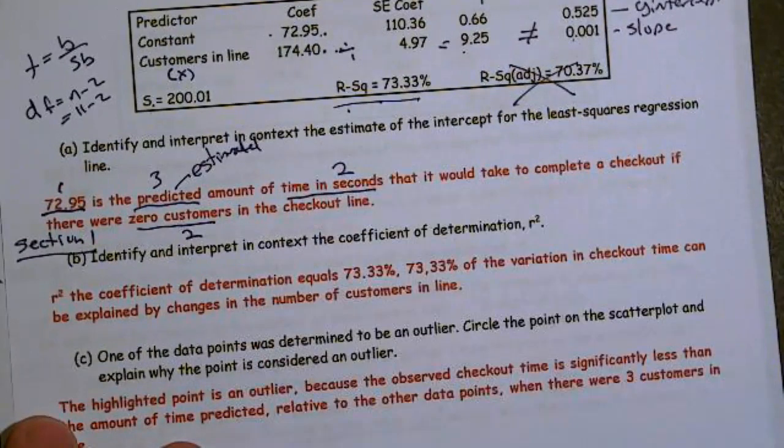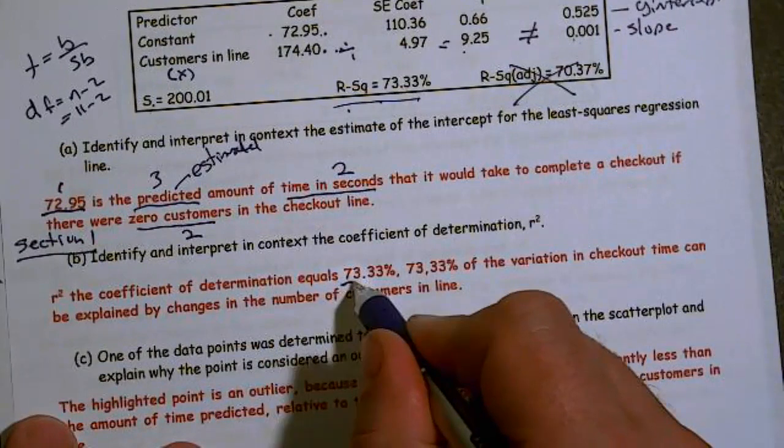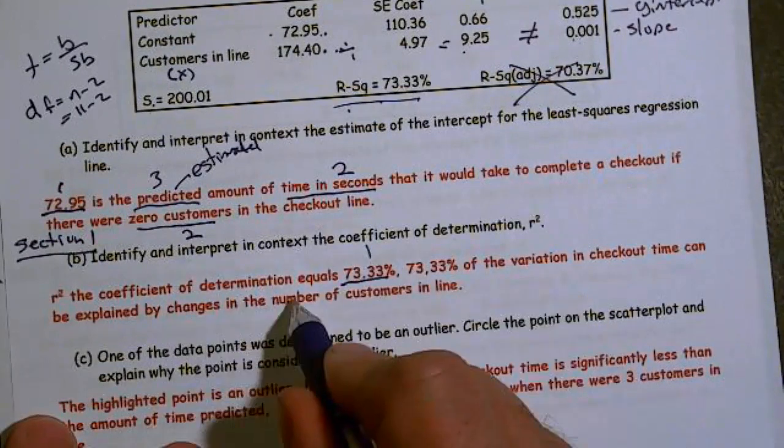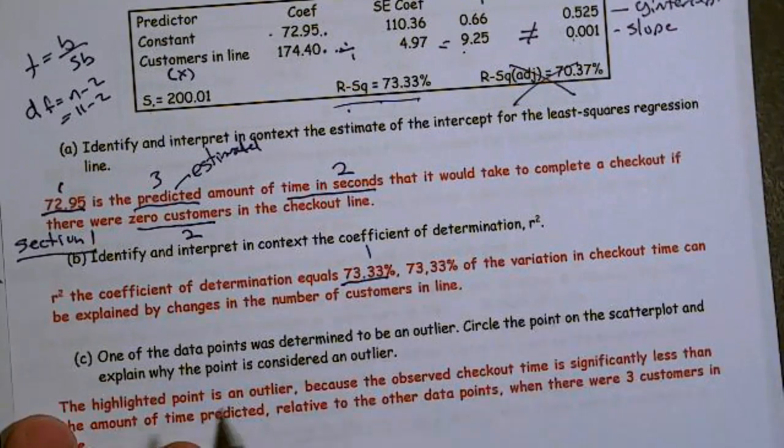And by the way, so R squared is the coefficient of determination, and it equals 73.3%. That's my first part.